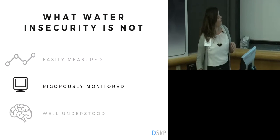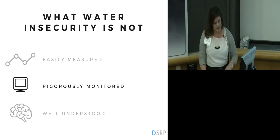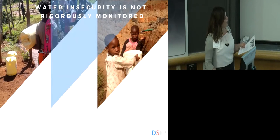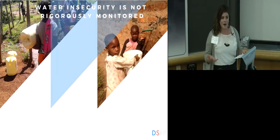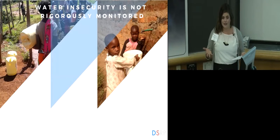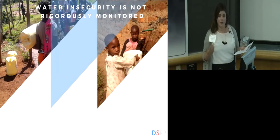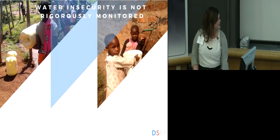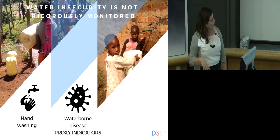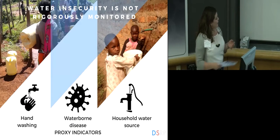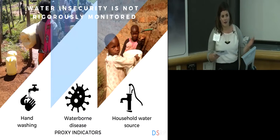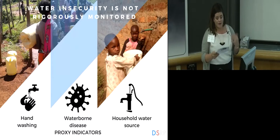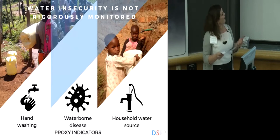Water insecurity is also not rigorously monitored. Because the scientific, programmatic, and policy communities do not agree upon how best to measure water insecurity, we cannot critically monitor changes in how water-insecure households can be, or respond in a meaningful way. Therefore, water insecurity is often quantified by proxy indicators such as handwashing, prevalence of waterborne disease, and household water source. These are all components of water insecurity, but they overlook the system as a whole and prevent us from monitoring changes and quantifying the impacts of our evaluations.